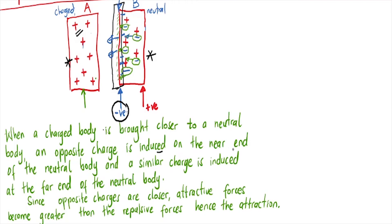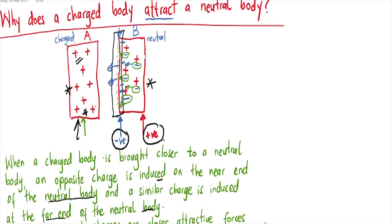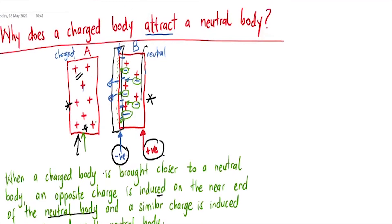An opposite charge is induced on the near end of the neutral body, and a similar charge is induced at the far end of the neutral body. That similar charge is the positive charge — another positive charge is induced at the far end of the neutral body, which is right there.